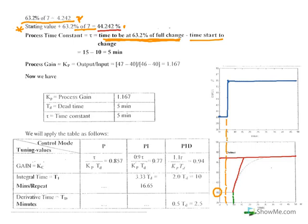On the graph, the output at 63.2% is at 44.242. In order to find the time at 63.2%, you take a horizontal line from 44.242 on the output axis until you reach the curve. Then you take a vertical line down to the time axis.